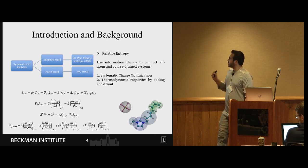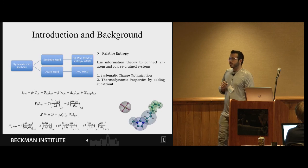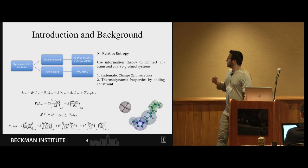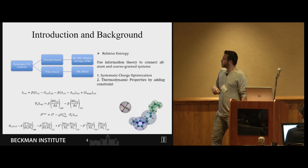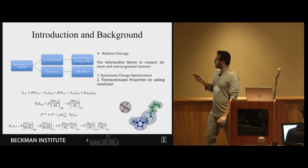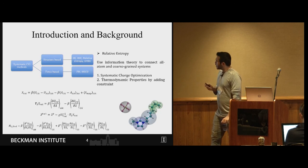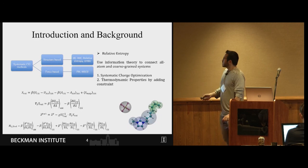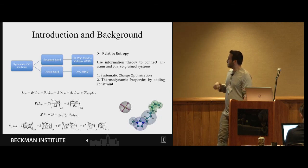Furthermore we developed a method to systematically reproduce thermodynamic properties in coarse-graining procedure so we reproduce the pressure of the system using Lagrange multiplier and constrained optimization. If we write the objective of this optimization it melts down to a bunch of ensemble averages in both all atom and CG representation. So we have to do multiple or hundreds of MD simulations and data processing in order to retrieve the optimal parameters.